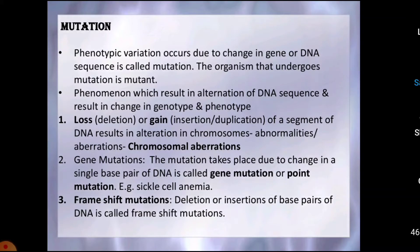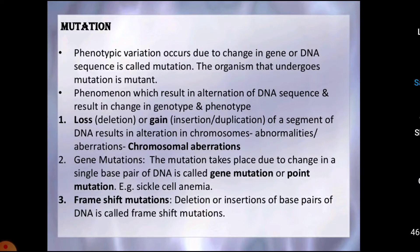Depending on the cause, mutations can be spontaneous if they occur naturally in nature, or induced if they are deliberately caused by certain agents. Chemical mutagens include a variety of chemicals like ethyl methane sulfonate and mustard gas. Physical mutagens or physical factors include X-rays, gamma rays, ultraviolet rays, and other cosmic radiations.